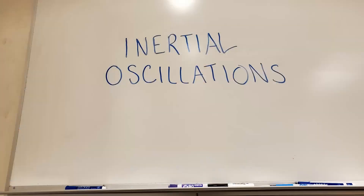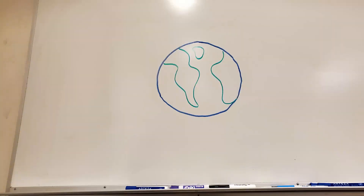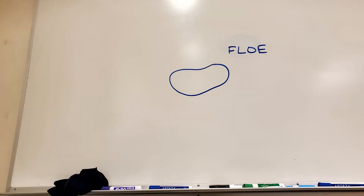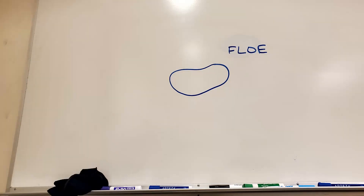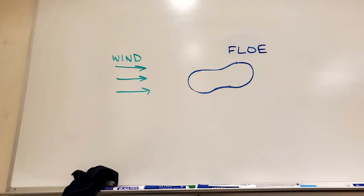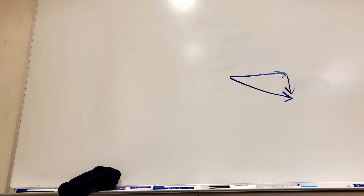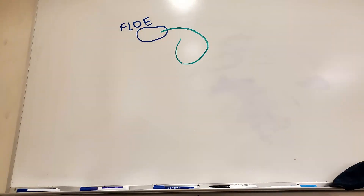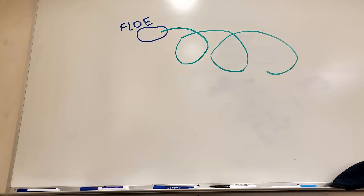So what are inertial oscillations? As you probably know, the rotation of the earth causes the Coriolis force, which is stronger toward the poles. It affects the dynamics of individual chunks of sea ice called floes. When a floe in the Arctic is pushed by, say, the wind, its velocity is deflected to the right by the Coriolis force. This results in circular trajectories called inertial oscillations.